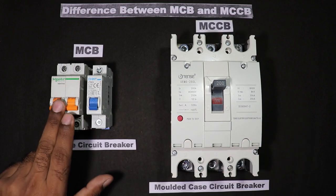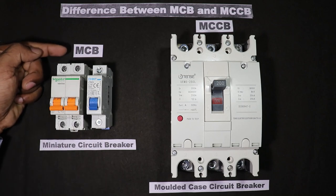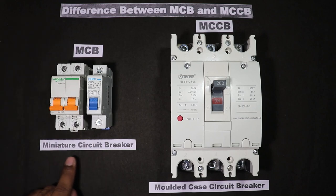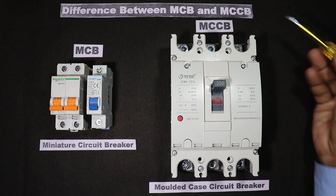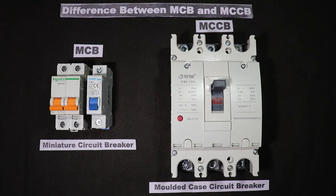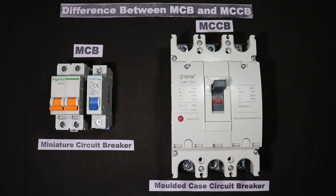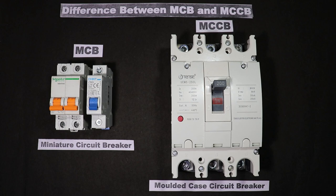This device here is known as MCB. The full form of MCB is Miniature Circuit Breaker. This device here is known as MCCB. The full form of MCCB is Molded Case Circuit Breaker. Friends, in our homes we generally use MCB, so you are all well aware of it, but I will still tell you some information.